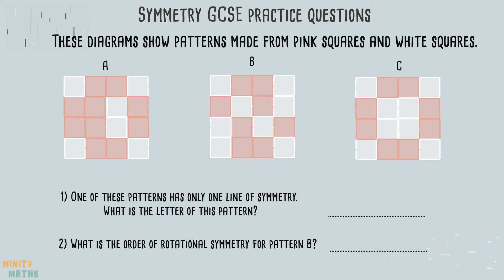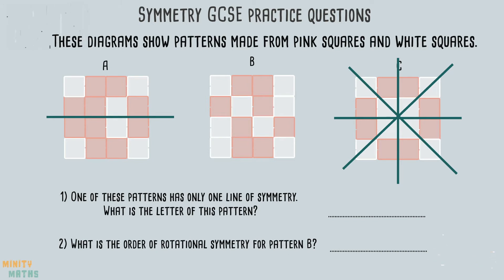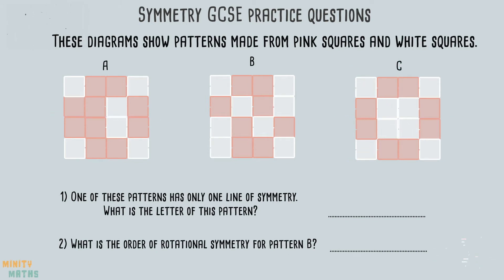For part 1 of this question, start by drawing the lines of symmetry on each pattern. We can see that pattern A only has one line of symmetry, but it's always best to double check the other patterns too, in case you miss any. Pattern B does not have any lines of symmetry, and pattern C has many. Therefore, we can be sure the answer is pattern A.